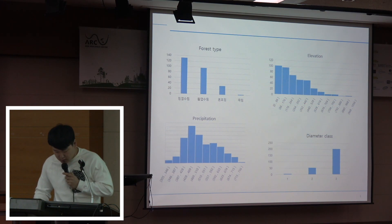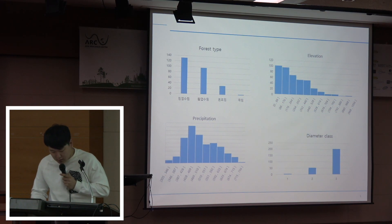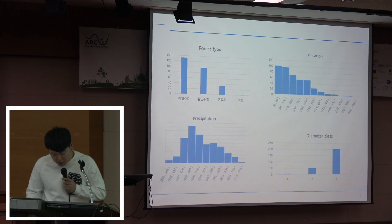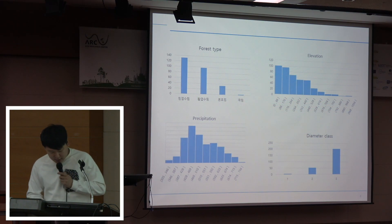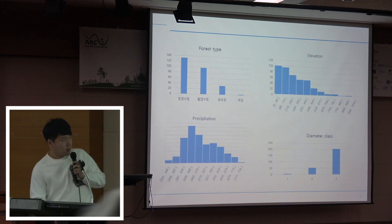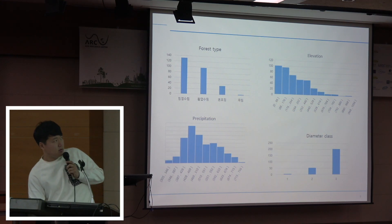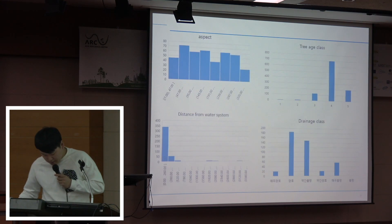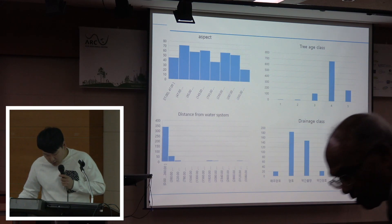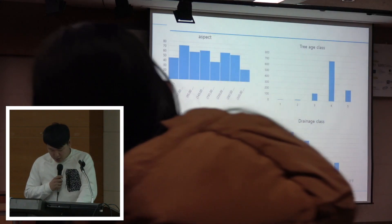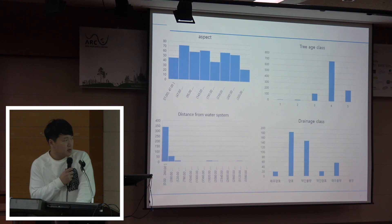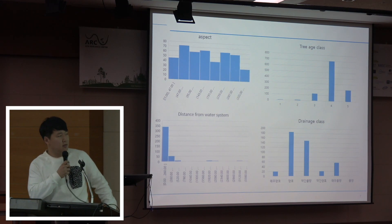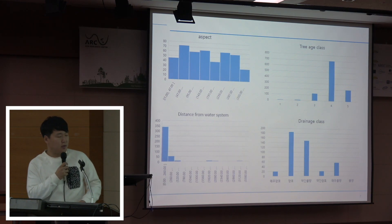Landslides occur most frequently in coniferous forests, and lower in low elevation sites. And the closer to the water system, the more frequently landslides occur.